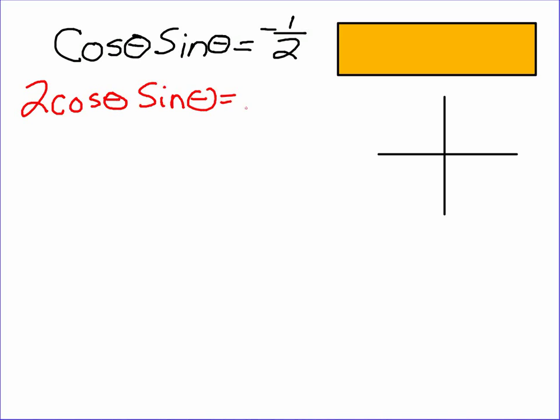So I'm going to take this equation and multiply both sides by 2. This looks familiar to me, this 2 cosine theta sine theta. Also, the commutative property says I can take multiplications and move them in any order that I like. All right, 2 sine theta cosine theta.